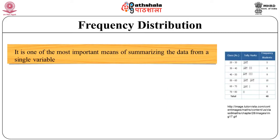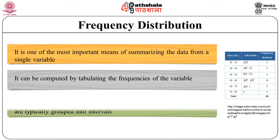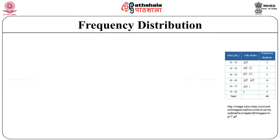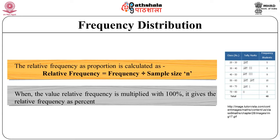What is frequency distribution? It is one of the most important means of summarizing data from a single variable. It can be computed by tabulating the frequency on a variable. For quantitative variables with many possible values, values are typically grouped into intervals. The relative frequency as proportion is calculated, and when multiplied with 100%, it gives the relative frequency as percent.